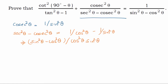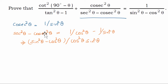Now let us look at the second term. The numerator of the second term is cosecant square theta, which is defined as 1 divided by sin square theta. The denominator is secant square theta minus cosecant square theta. Secant square theta is 1 divided by cos square theta, and cosecant square theta is 1 divided by sin square theta. Simplifying, we get sin square theta minus cos square theta divided by cos square theta times sin square theta.